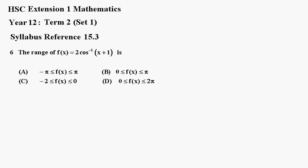Number 6. The range of function x, which equals 2 times the inverse cos of x plus 1, is a, b, c, or d.